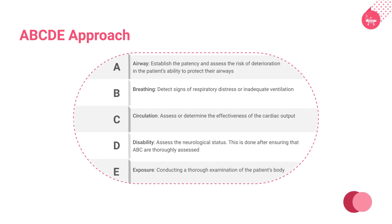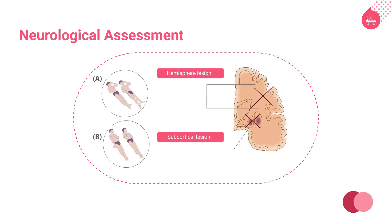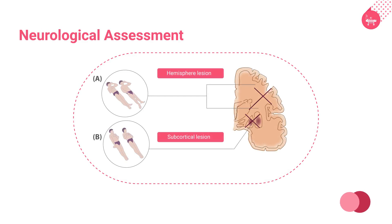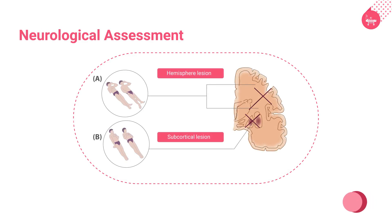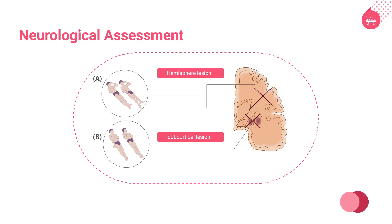For neurological assessment, prior to the neurological examination, a general physical examination is done to find evidence of any trauma, purpura, meningeal irritation, elevated intracranial pressure, and so on. The neurological examination includes motor responses to noxious stimuli, brainstem reflexes, and respiratory pattern.